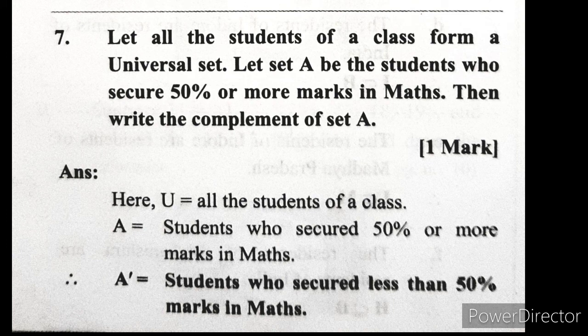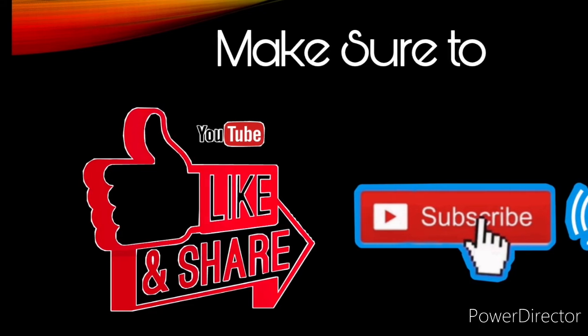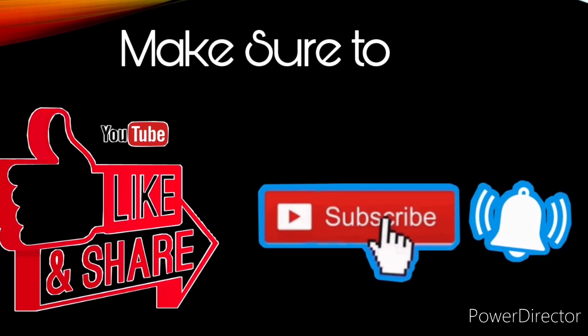Question number 7: Let all students of a class form the universal set. Set A is the students who secure 50% or more marks in maths. Write the complement of set A. The complement of A will be the students who scored less than 50% marks in maths. This was an easy practice set — I hope you understood each and every sum.